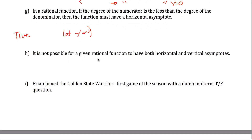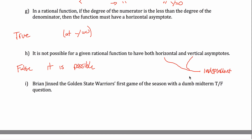Part H: it is not possible for a given rational function to have both horizontal and vertical asymptotes. That is a very false statement — it is absolutely possible. Vertical and horizontal asymptotes are independent of each other. Horizontal asymptotes describe end behavior, while vertical asymptotes occur at points where the function is undefined and the graph goes toward infinity. These have nothing to do with each other, and there is no reason why you couldn't have both in the same rational function. That's false.